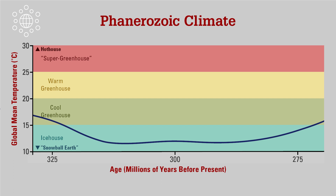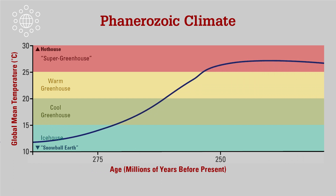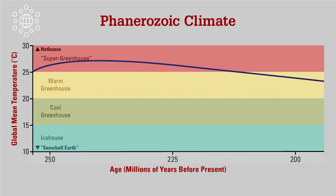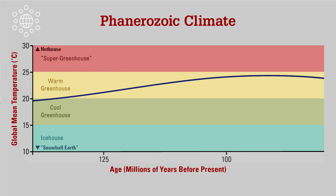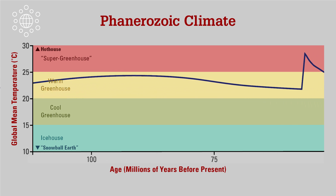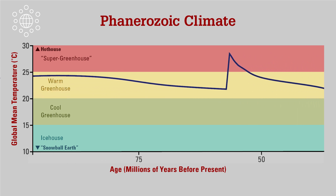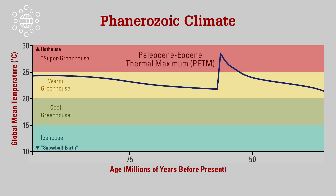On the flip side of this is the extreme warming that occurred 55 million years ago at the beginning of the Cenozoic, the period called the Paleocene-Eocene Thermal Maximum, or PETM. Instead of a gradual process, this event is known as a hyperthermal, or a rapid warming event, that occurred over the course of about 20,000 years.